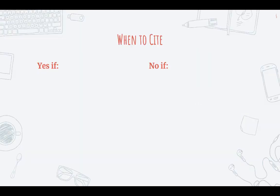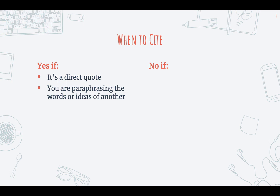So let's talk about when to cite and when not to cite, because sometimes you do need to cite, but sometimes you don't. You need to cite if it's a direct quote — that's when you take something that someone said and put it word for word in your paper. Yes, if you are paraphrasing the words or ideas of another — this is when you take what someone else wrote or said and put it in your own words — you still need to cite and give them credit.